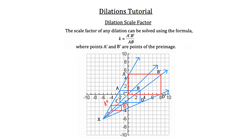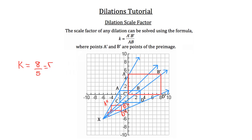If you wanted to name the reduction, we'd call it A double prime, B double prime, C double prime, D double prime. Now let's find the scale factor of the enlargement. K equals the distance of A prime to B prime, which counting along gives us eight, over the distance of A to B on the original image, which is five. So our scale factor is eight over five.